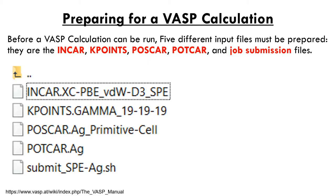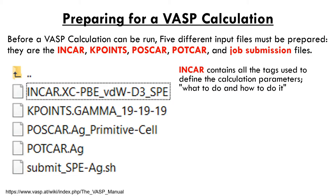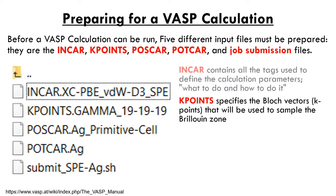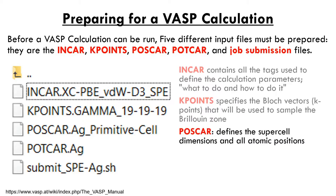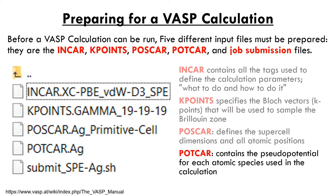Briefly, these files serve the following purposes. The INCAR file contains almost all the directions that tell VASP what type of calculation to perform — essentially what to do and how to do it. The KPOINTS file specifies the k-vectors used to sample the Brillouin zone. The POSCAR file defines the dimensions of the supercell, the number and types of atoms, and their arrangements within the supercell. The POTCAR file contains the pseudopotential information for each atomic species. The job submission file contains the instructions required for your computer to run the VASP calculation.